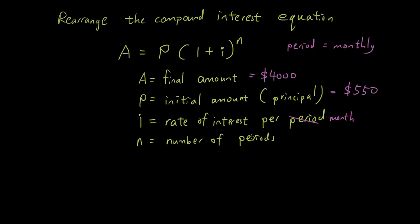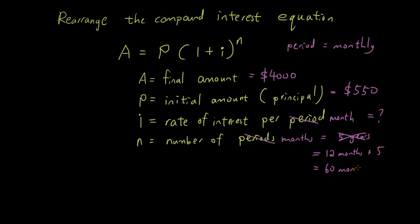As soon as you see 'monthly', cross that out and change it to 'months'. We don't know I, and N is 5 years — but since we're not working in years, cross that out and change it to 12 months times 5, which is 60 months. So N equals 60. Now plug all these numbers into the equation: 4,000 equals 550 times (1 plus i) to the power of 60.